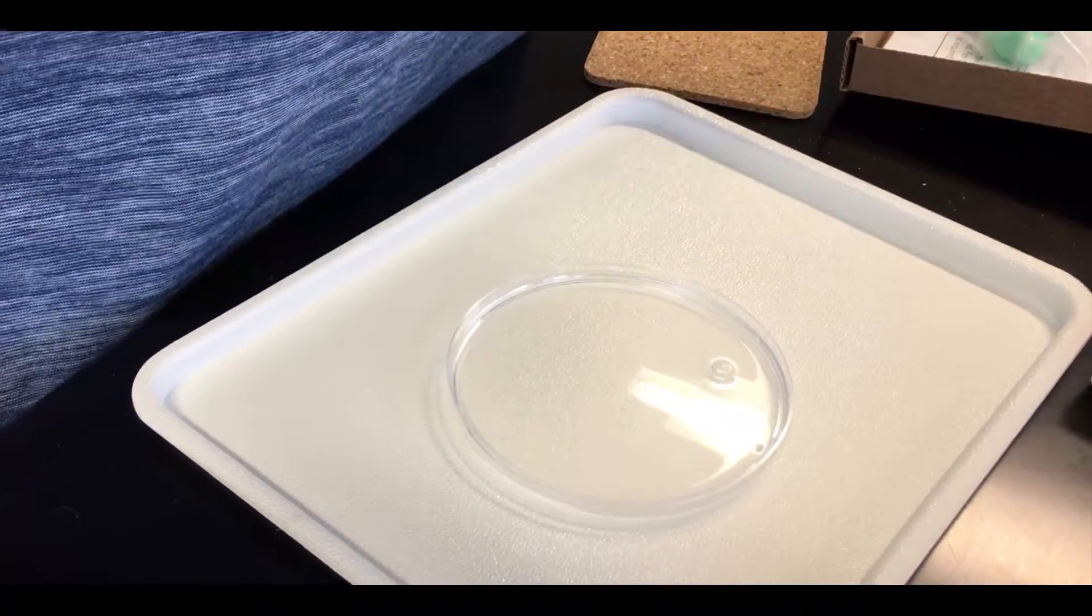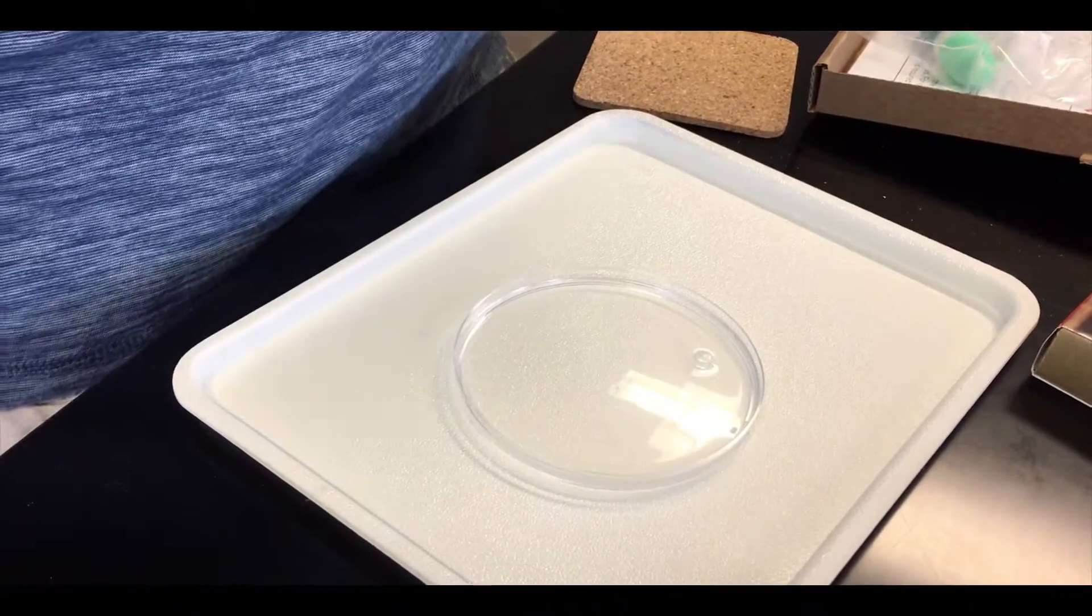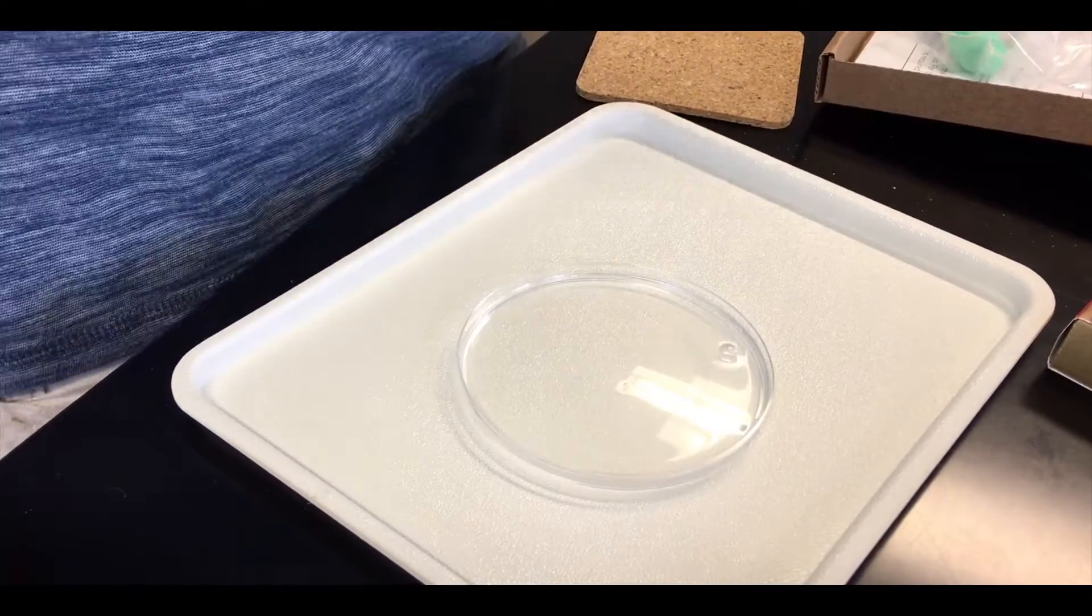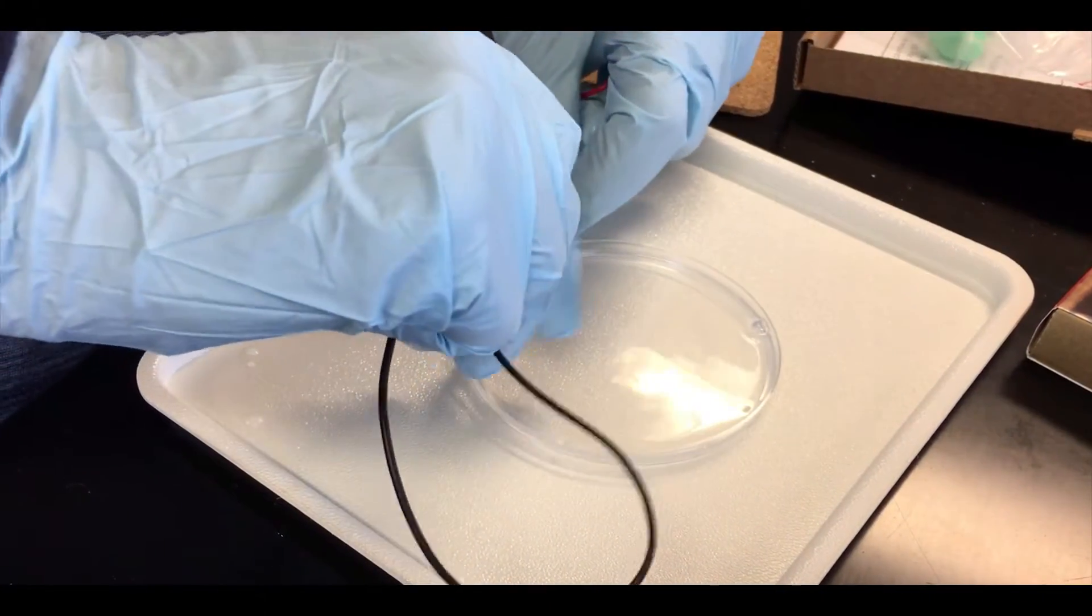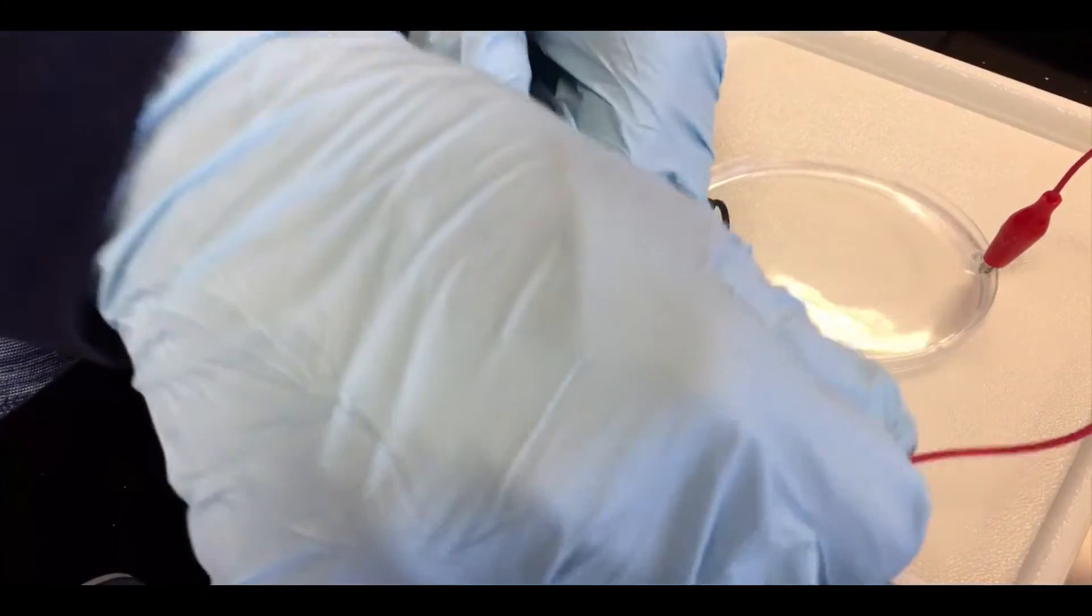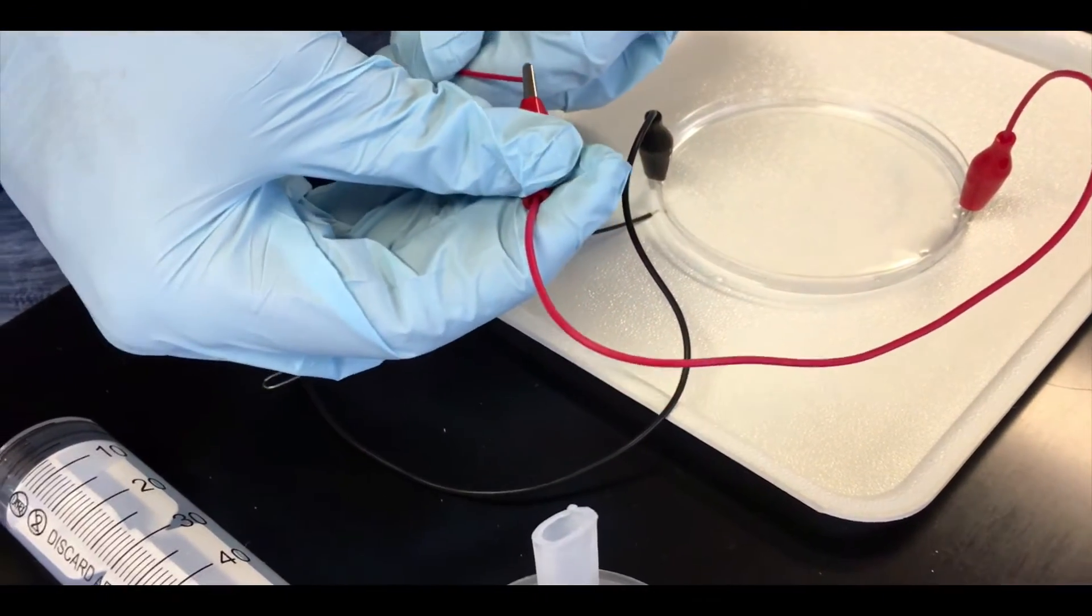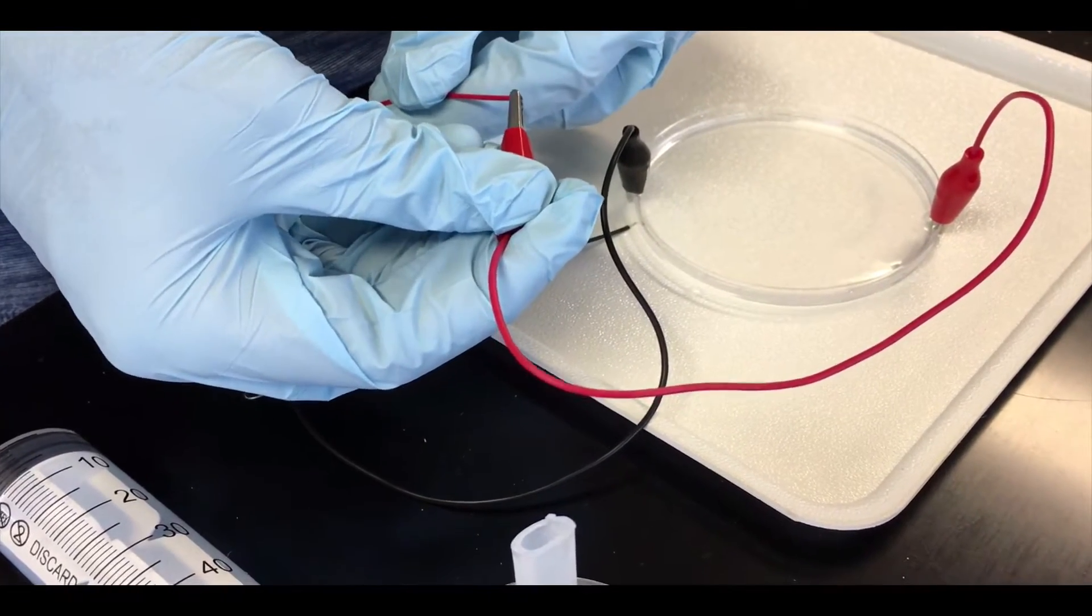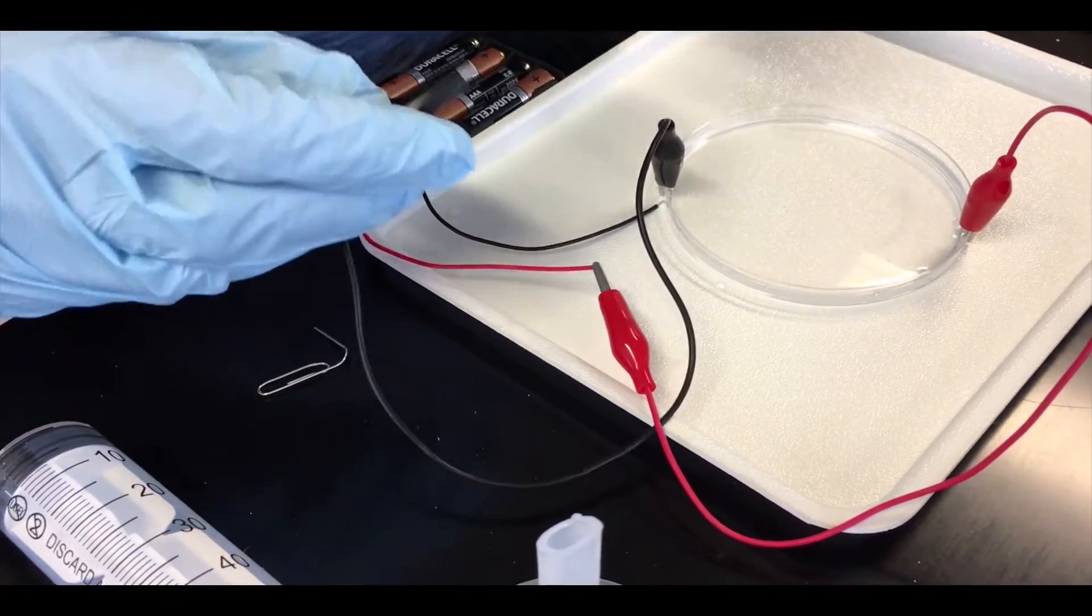And now we have alligator clips which are going to allow us to connect the battery to the water. We're gonna match the colors up. You don't really have to match up the colors, but this way we'll know how electrons are flowing. A wire is a wire, but why not match? It looks prettier that way.